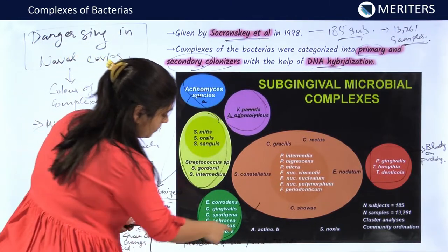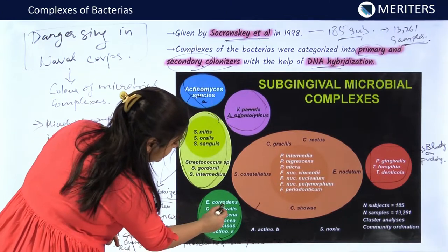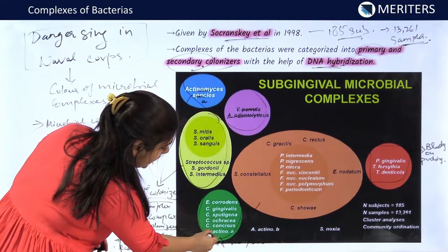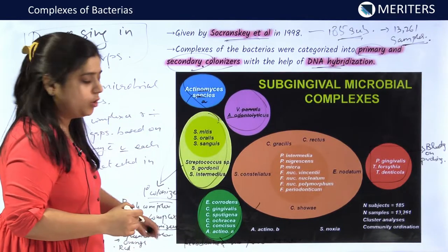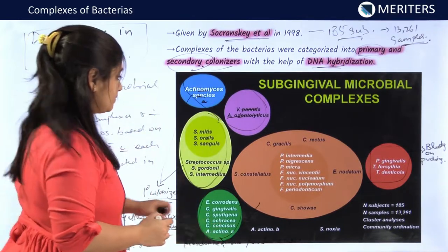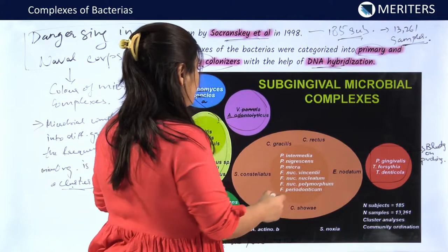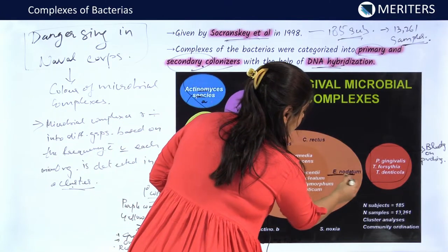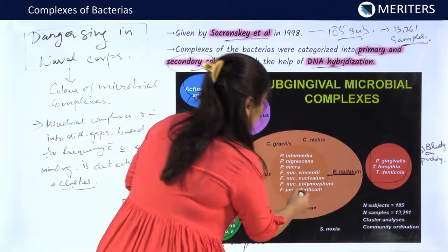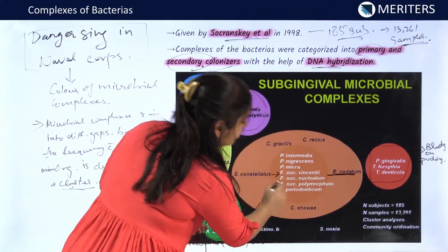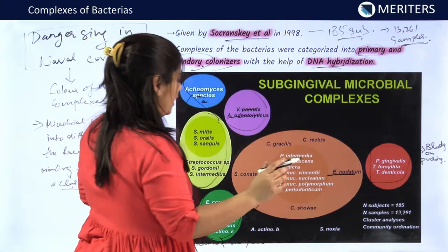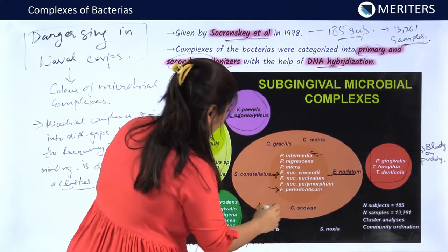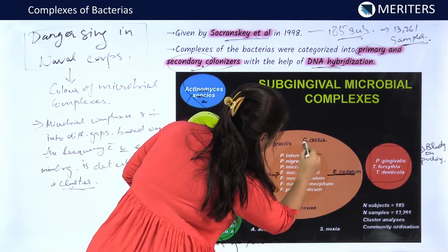The green microbial complex consists of Eikenella corrodens, Capnocytophaga gingivalis, C. sputigena, and Aggregatibacter actinomycetemcomitans group A. The orange complex consists of Prevotella intermedia, Campylobacter rectus, Eubacterium nodatum, Fusobacterium nucleatum, and F. periodonticum. The important bacteria to remember in this complex are Prevotella intermedia, Fusobacterium nucleatum, and Campylobacter rectus.